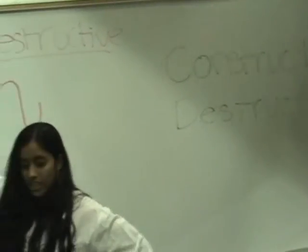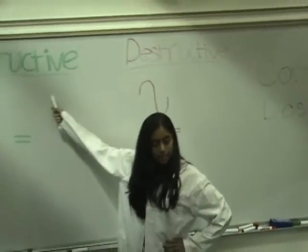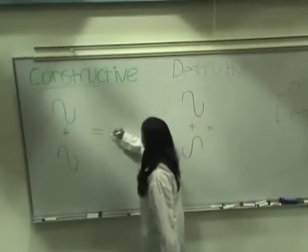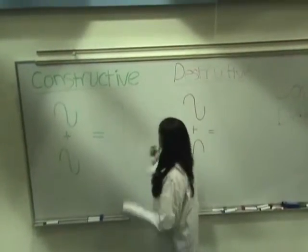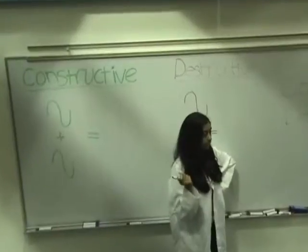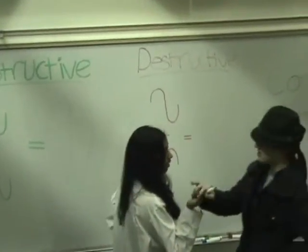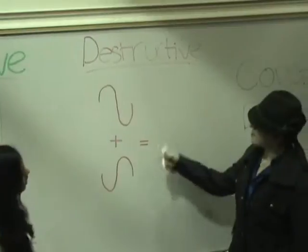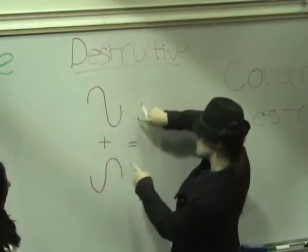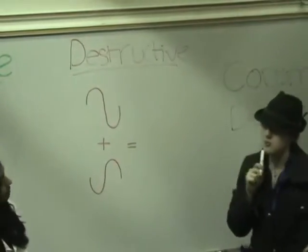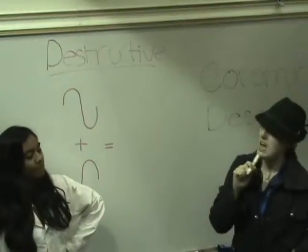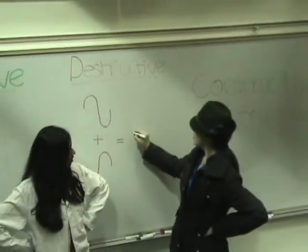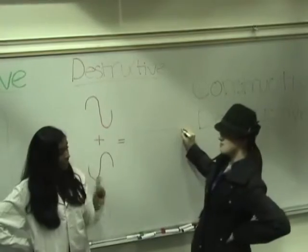Now for constructive, when two of the same sine amplitude wave come together, they make an even bigger wave. Alright, so let me guess about destructive. So if you have two waves of opposite sine amplitude like so, judging from my superior intellect, I am guessing that your interference would look something like a straight line. That's right.